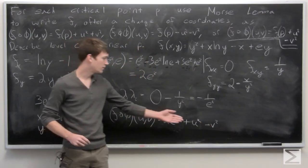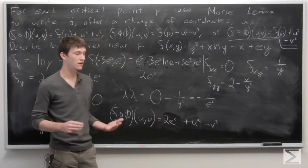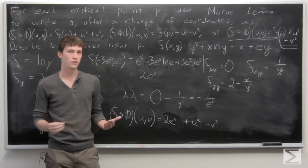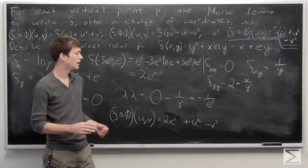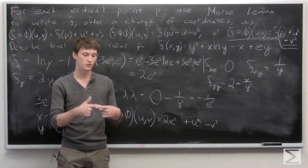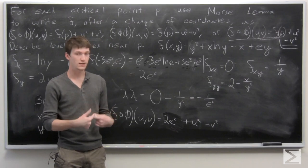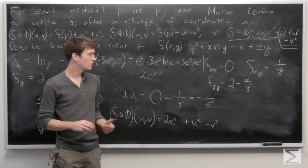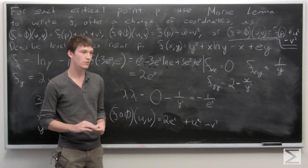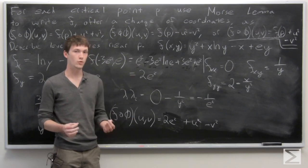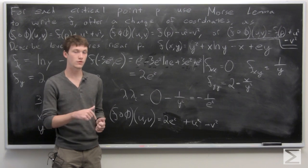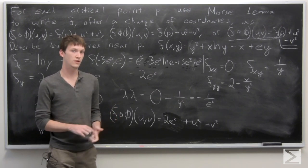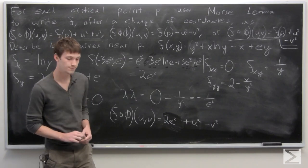In this form it's easy to see that we have a saddle at our critical point. This means the level curves near the critical point will cross over at that point — rather than seeing circles as we would for a minimum or maximum, the level set crosses over itself at the saddle.